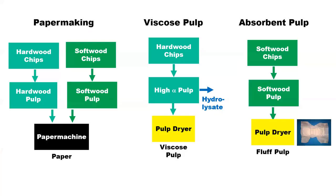In that process, papermakers try to combine the best properties of different fibers. We talk about hardwood fibers and softwood fibers mixed in a paper machine to produce paper. Hardwood pulp fibers are shorter in length — they have a smaller aspect ratio compared to softwood fibers, and softwood fibers produce better strength because of their length. So you mix the best of the two worlds to make better properties for a given paper grade. Of course, there are many different paper grades and depending on the application, you can shift the combination.